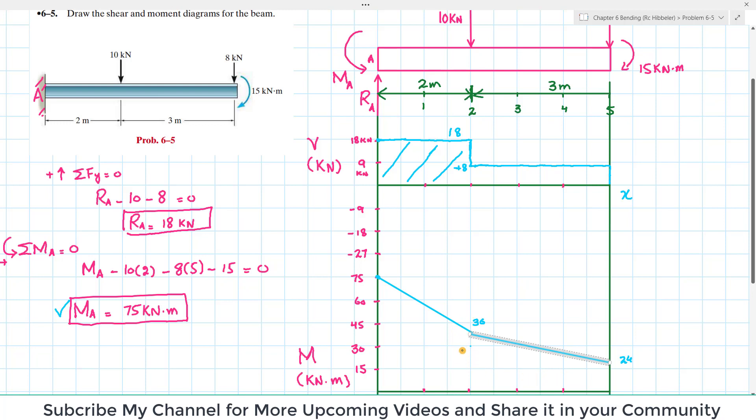This will be your bending moment. This is 39, not 36, this is 39 kN·m. Because 75 minus 36 equals 39. This will be your bending moment diagram.